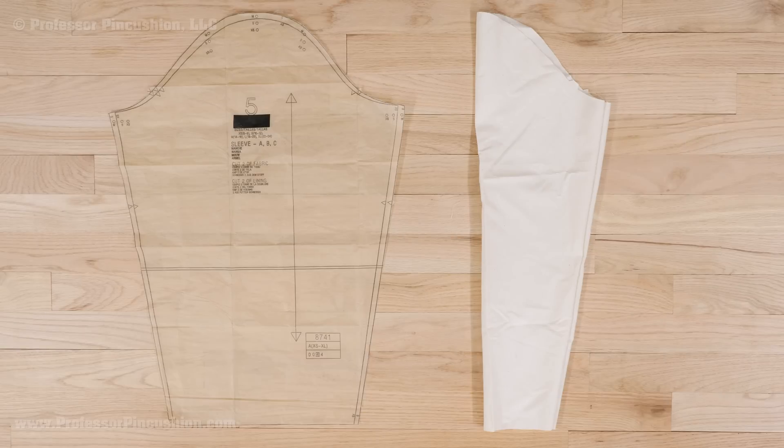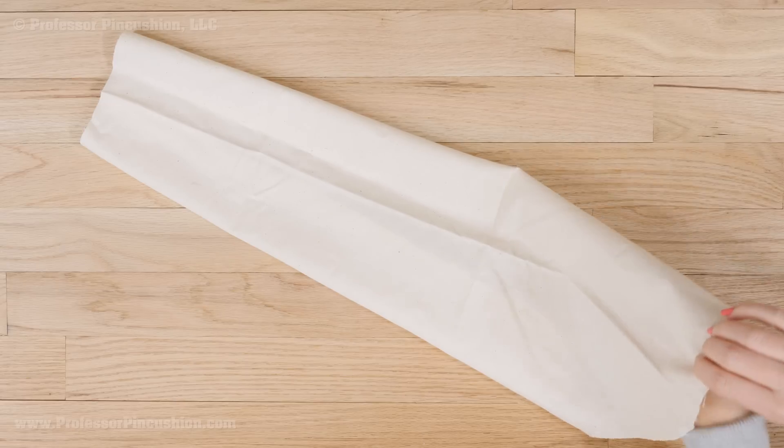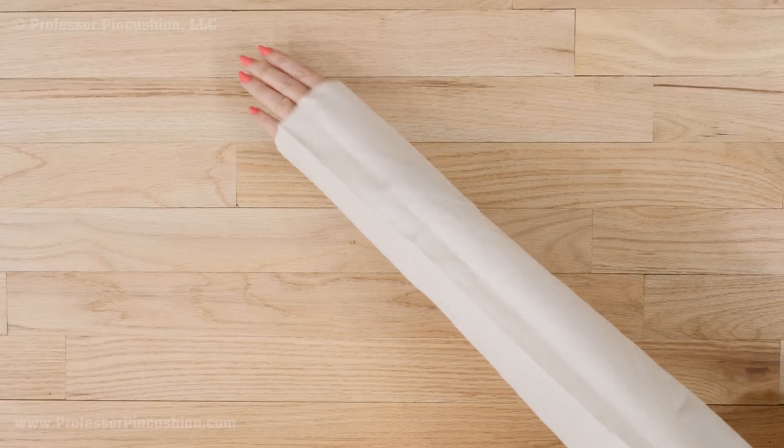Make a quick muslin from your sleeve pattern by cutting it out and basting the underarm seam together. Fit it on your arm and mark at the bottom where you want the zipper to go.